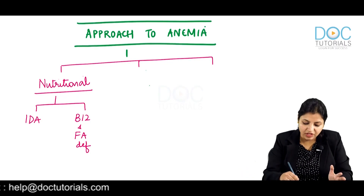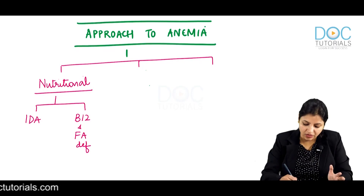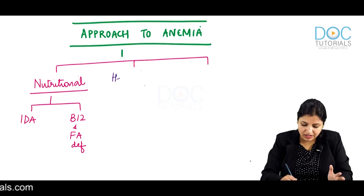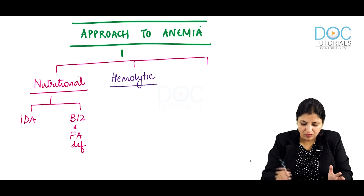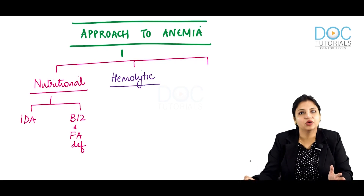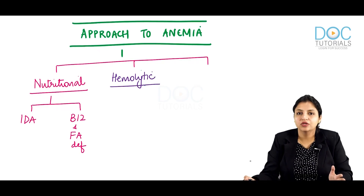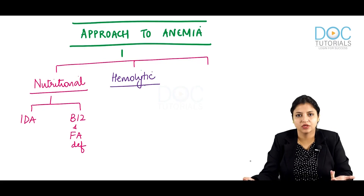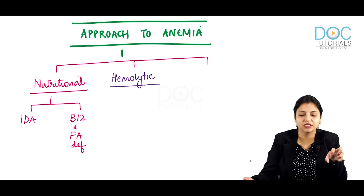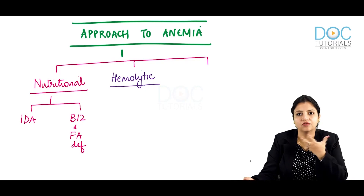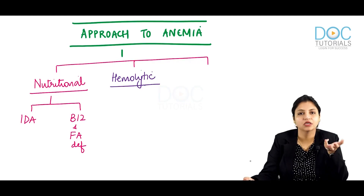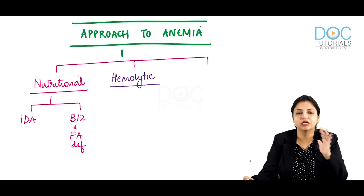The second type of anemia we commonly encounter is called hemolytic anemia, in which there is destruction of the RBC. So the first type is nutritional — caused by deficiency of dietary materials — and the second is hemolytic, where RBCs are being destroyed due to any cause.